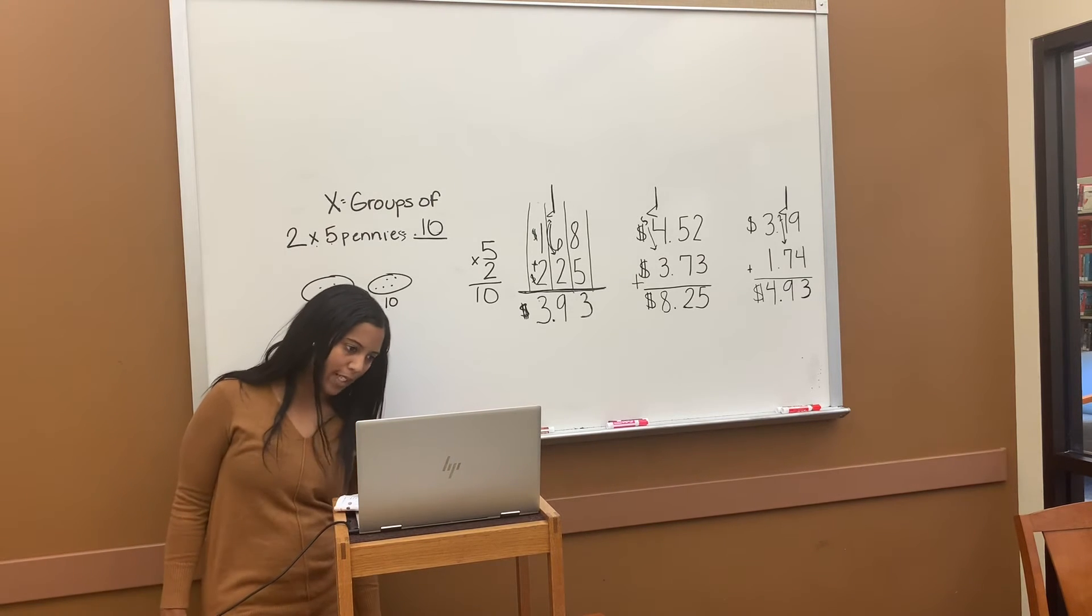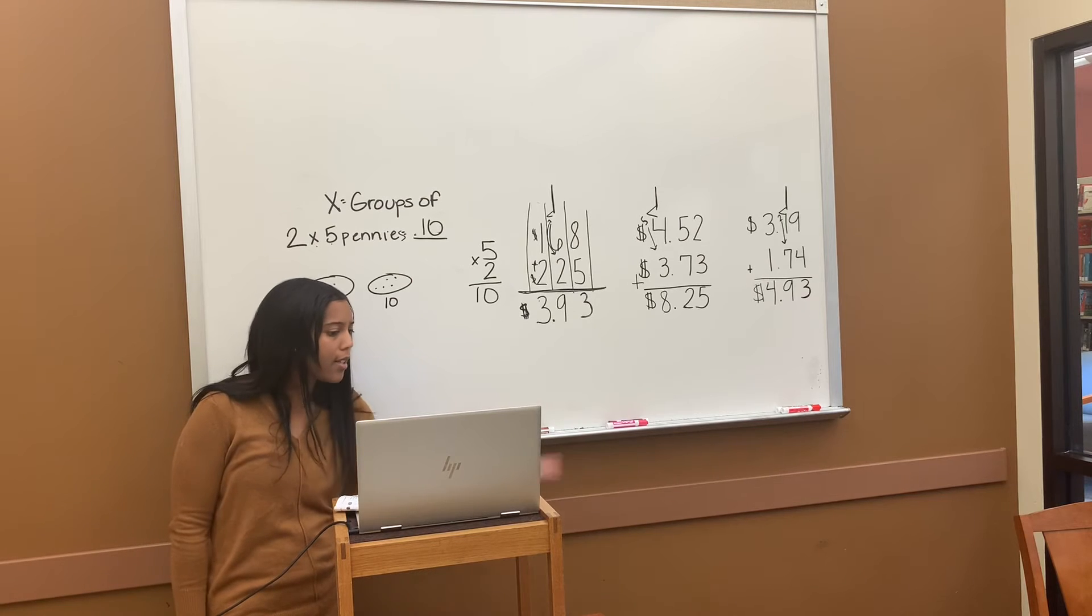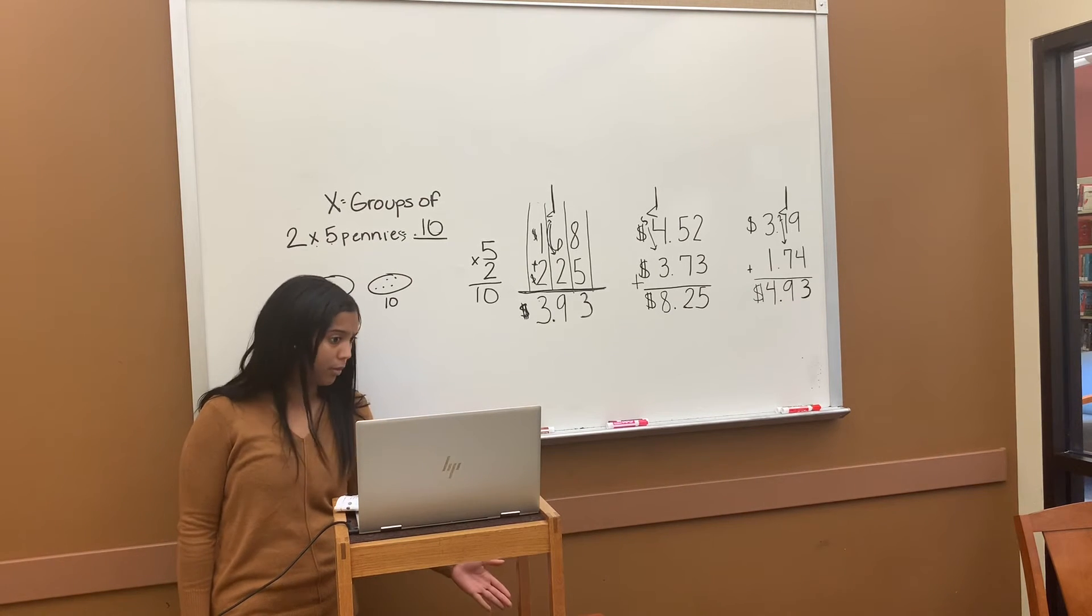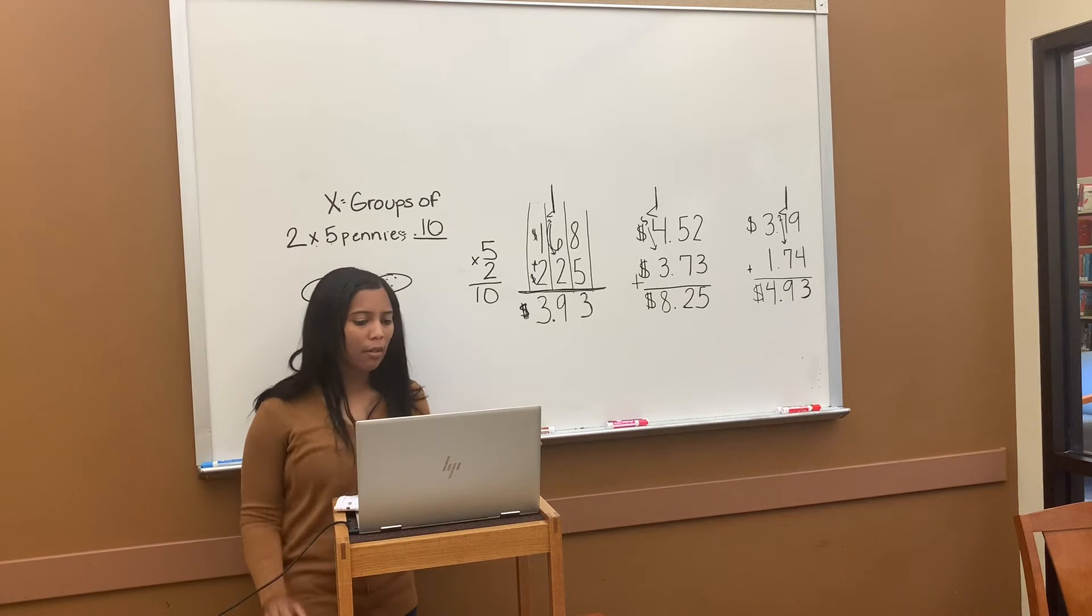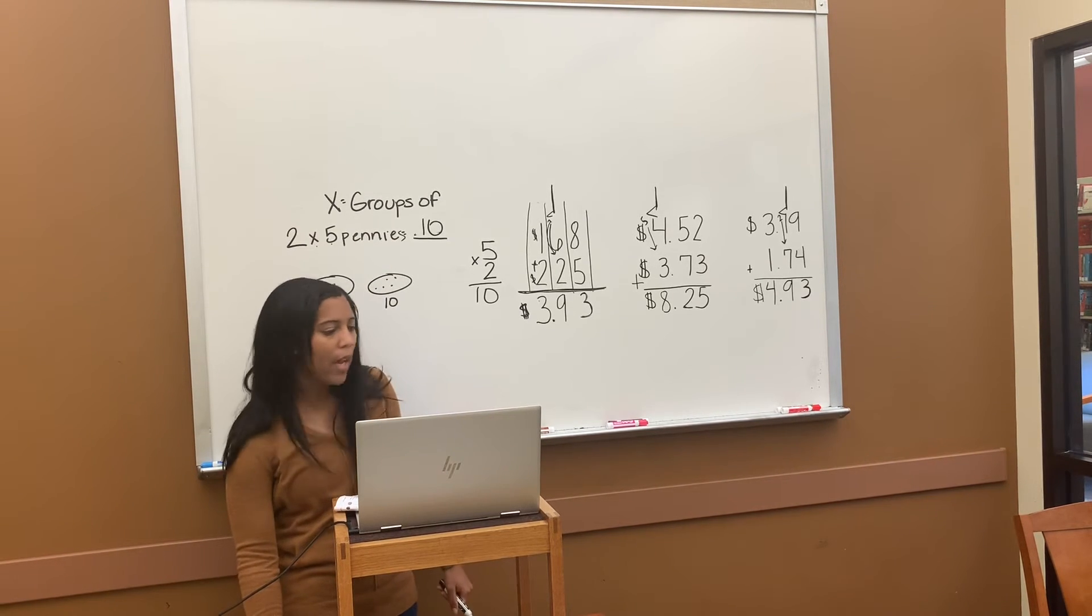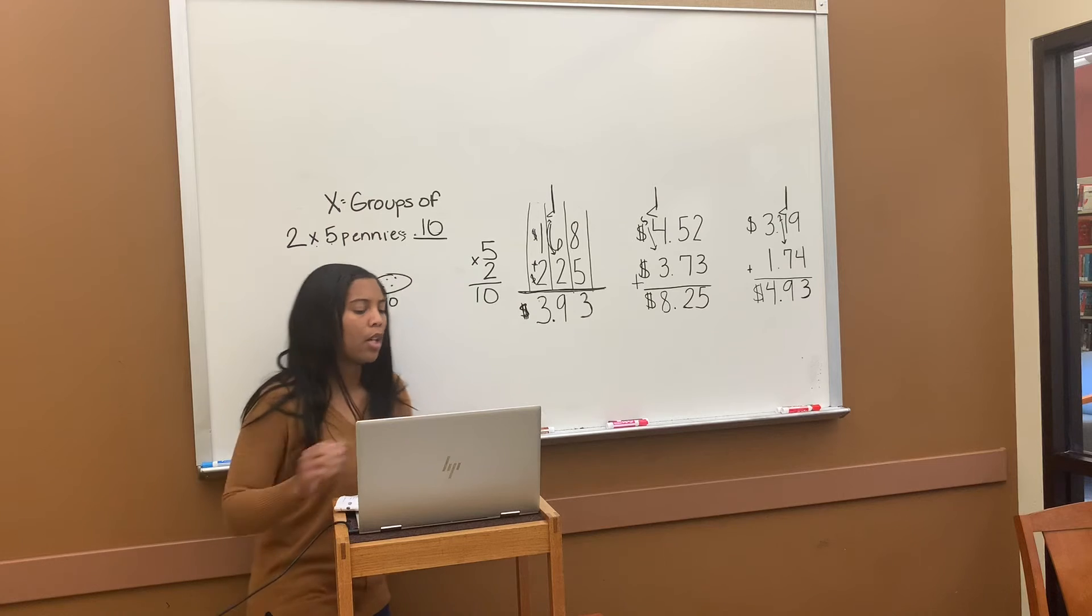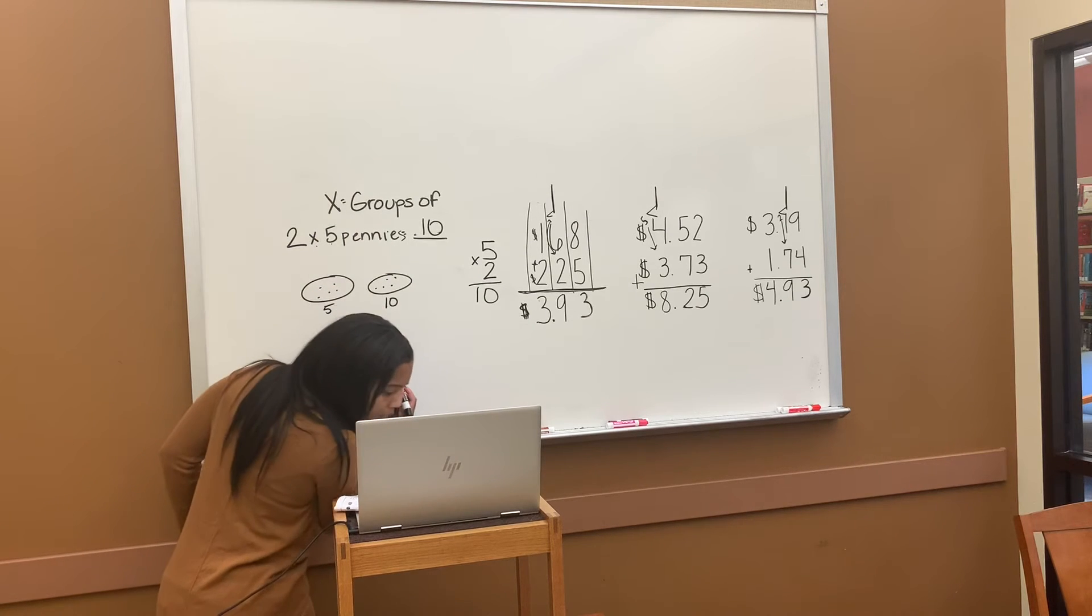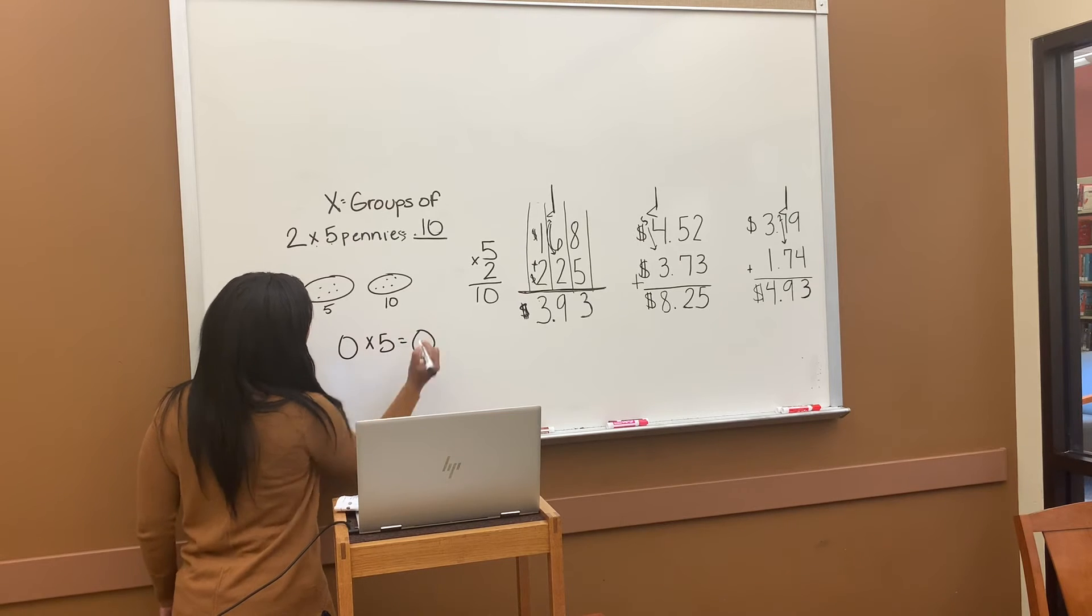That's zero times five. You have none. So zero times five is zero. Remember, anything times zero is zero. That means you have none. Anything multiplying times zero is always zero. So for d, we do zero times five equals zero. We have none.